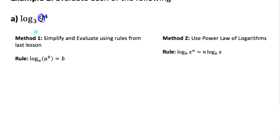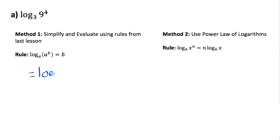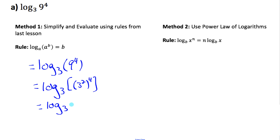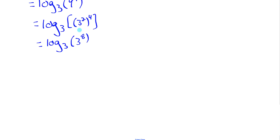For log base 3 of 9 to the 4: if I can rewrite 9 as a power with the same base as the log, I can solve this. Nine is 3 squared, so I have log base 3 of (3 squared) to the 4. The power of a power rule lets me multiply 2 and 4 to get 3 to the 8. Now log base 3 of 3 to the 8 — since the base of the log and the base of the power match, the answer is the exponent: 8.